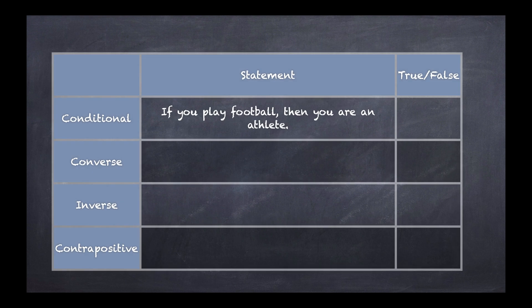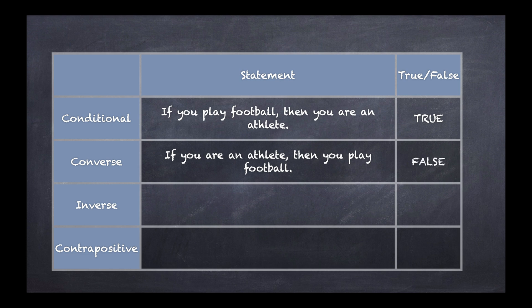All right, so now that we've looked at that, let's look at an example statement. We're going to write the converse, inverse, and contrapositive, and say whether or not each one is true or false. If you play football, then you are an athlete. Well, as we've already established, if you're playing football, I will consider you an athlete. That is true. But the converse is where we switch the order. So if you're an athlete, then you play football. Suddenly this isn't true, because you could be an athlete and play one of the other sports, like basketball. So this is false.